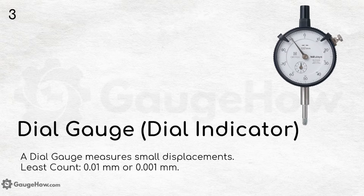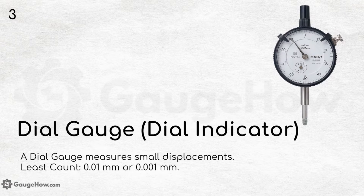Dial gauge or dial indicator. A dial gauge measures small displacements. The least count can either be 0.01 mm or 0.001 mm.